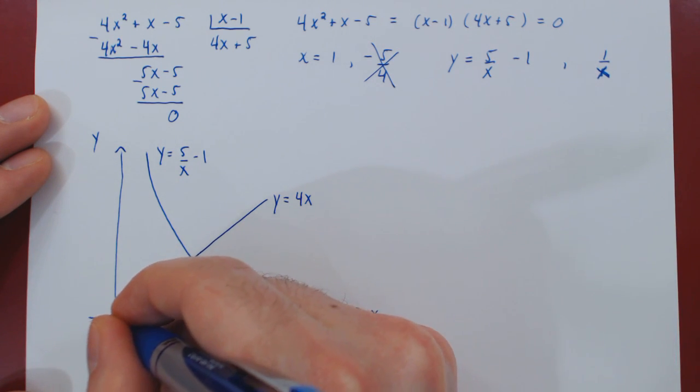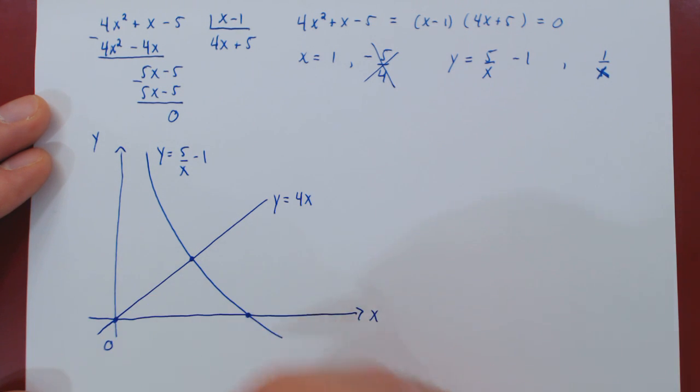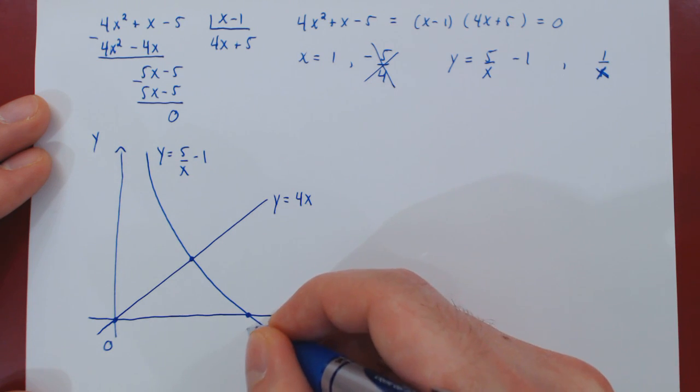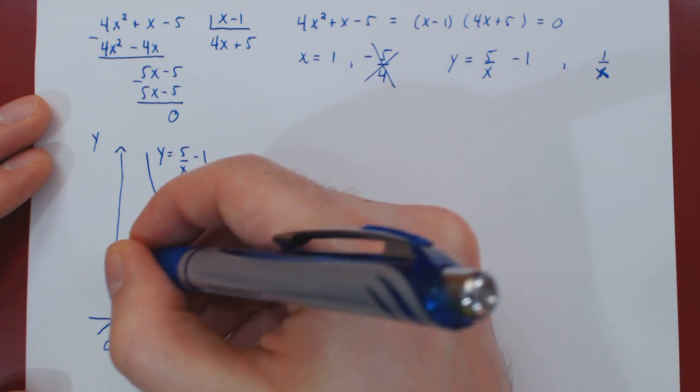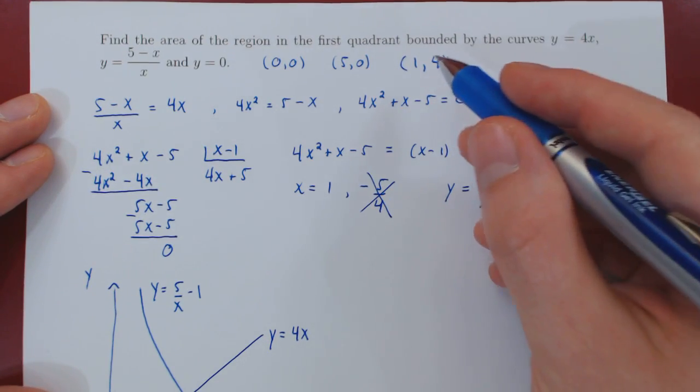If you recall, this was the origin, so (0,0). This was the point (5,0), so x is 5. And this other point was our third point of intersection, (1,4).